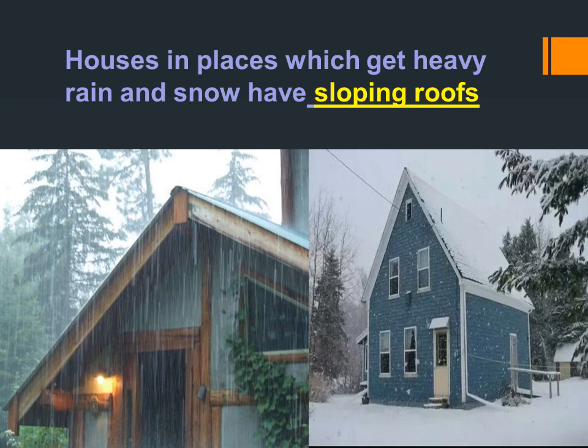Houses in places that get heavy rain and snow have sloping roofs. Where there is heavy rainfall and snowfall, the roofs are built in a sloping shape so that water does not get stuck or stored on the roof — it moves off easily. So in warm places houses have flat roofs, and in rainy or snowy places houses have sloping roofs.